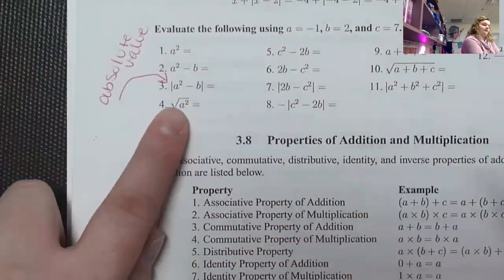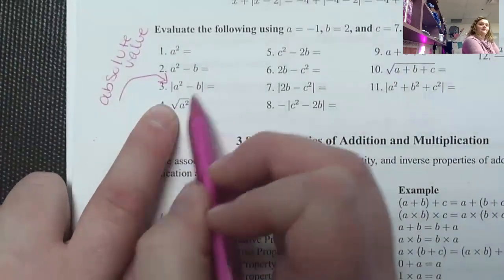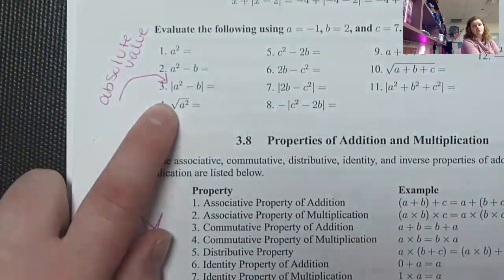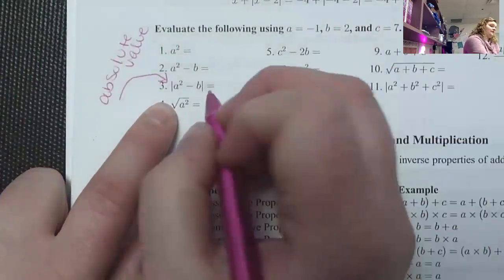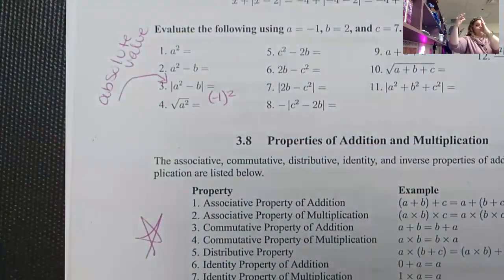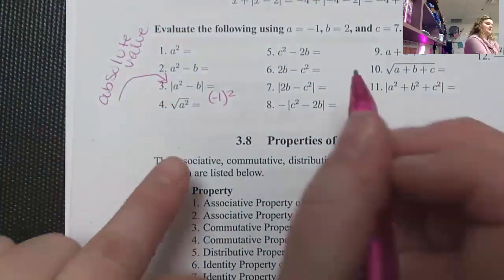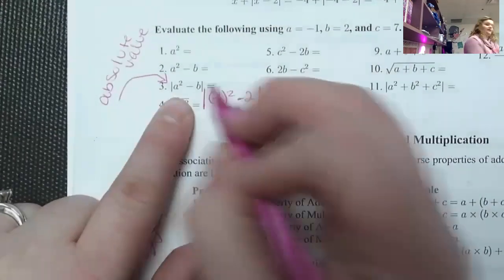So if I was doing this problem right here, like number three, it says a squared minus b. I have to do the stuff in the absolute value bars first. You kind of treat them like parentheses. So what is a squared? Well, a is negative one. Oh, perfect example. So that's a negative one squared. So negative one needs to be in those parentheses. And then you're going to subtract b, two. And then I'm going to take the absolute value.